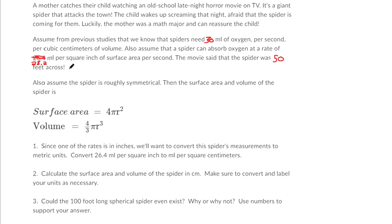So some scientists have figured out a spider needs 30 milliliters of oxygen per second, per cubic centimeters of volume. But then they also tell us a spider can absorb oxygen at the rate of 28.2 milliliters per square inch. So this one's per cubic centimeters and this one is per square inch. Those units don't really communicate well with each other. So we need to make a conversion.